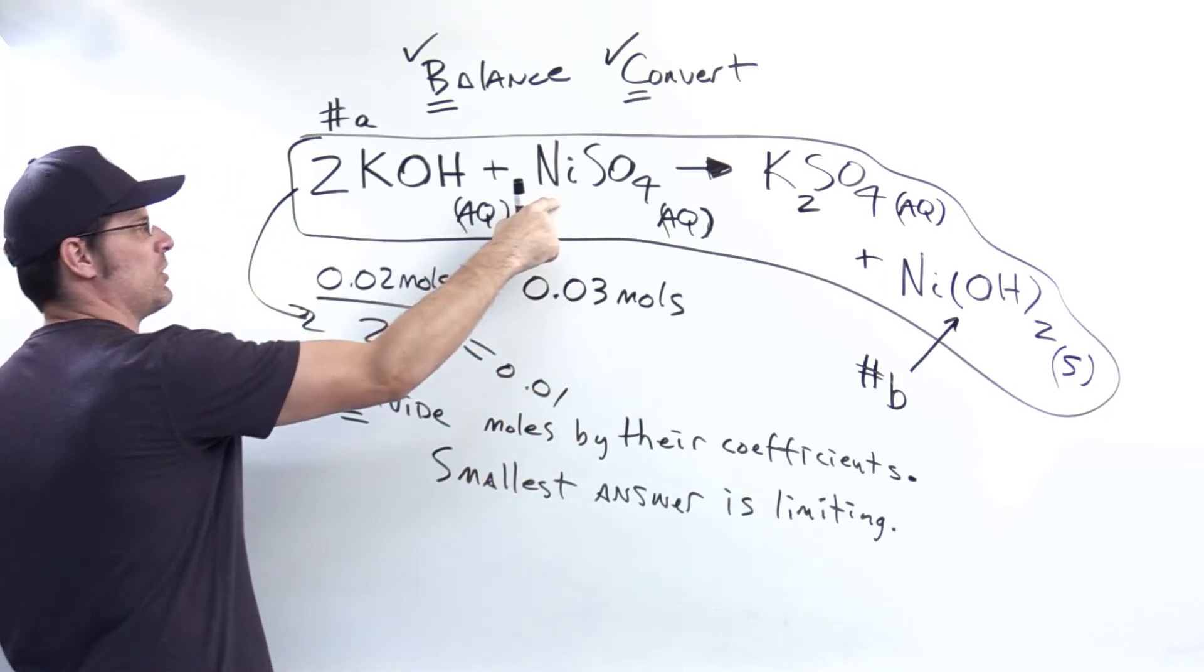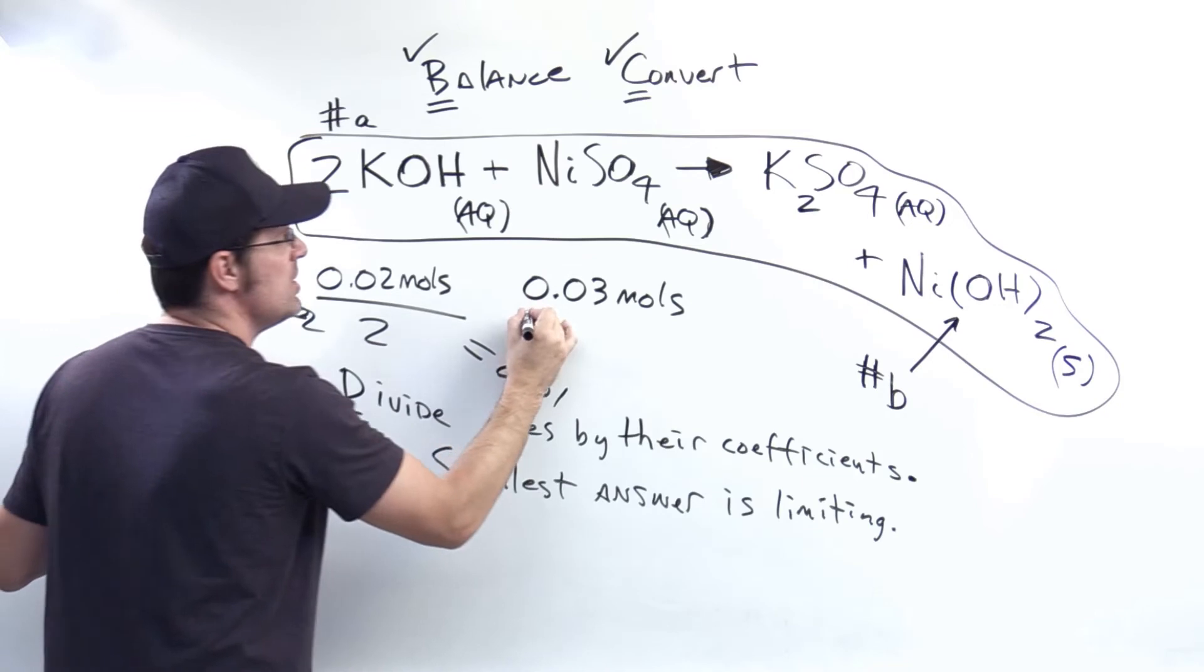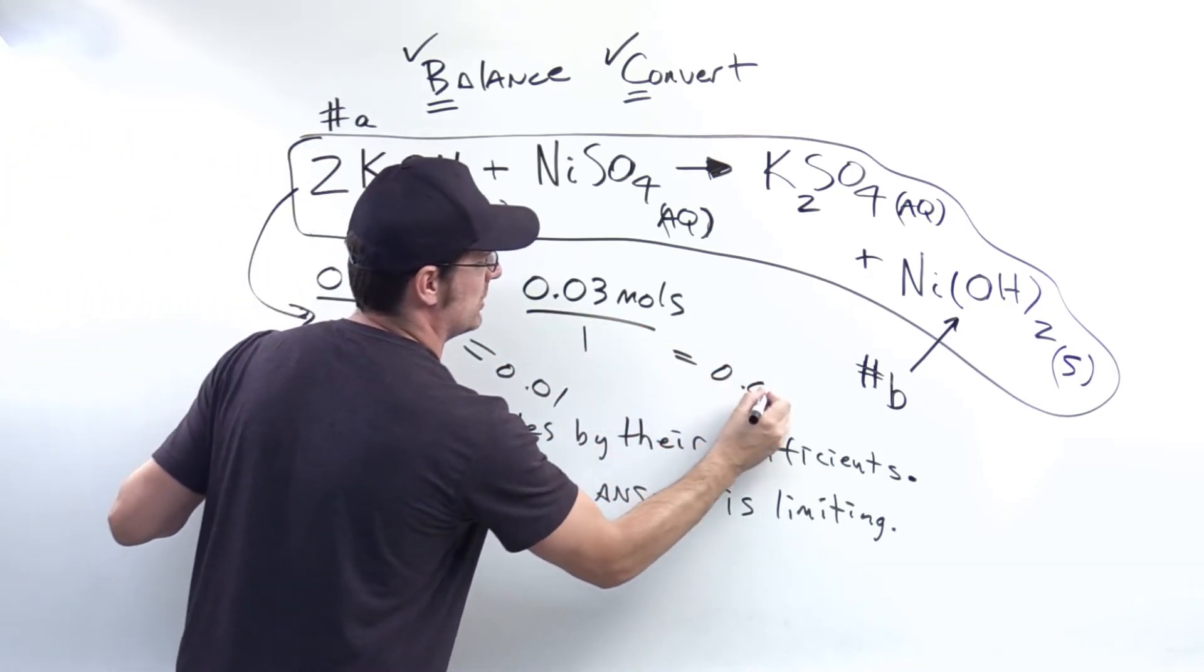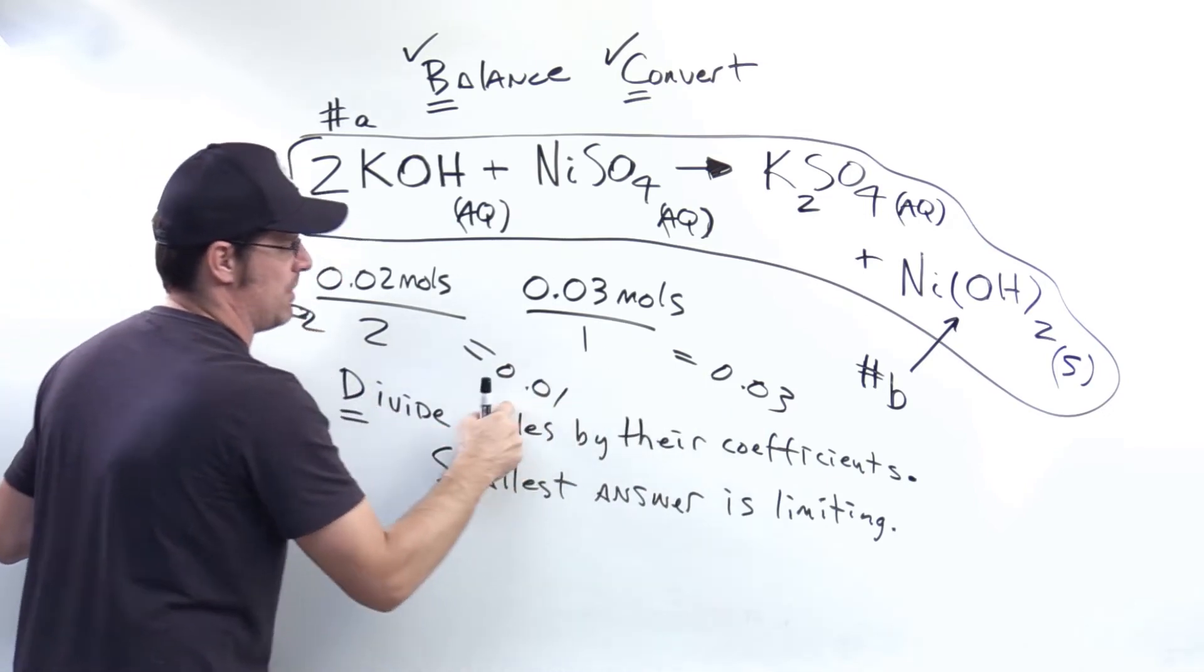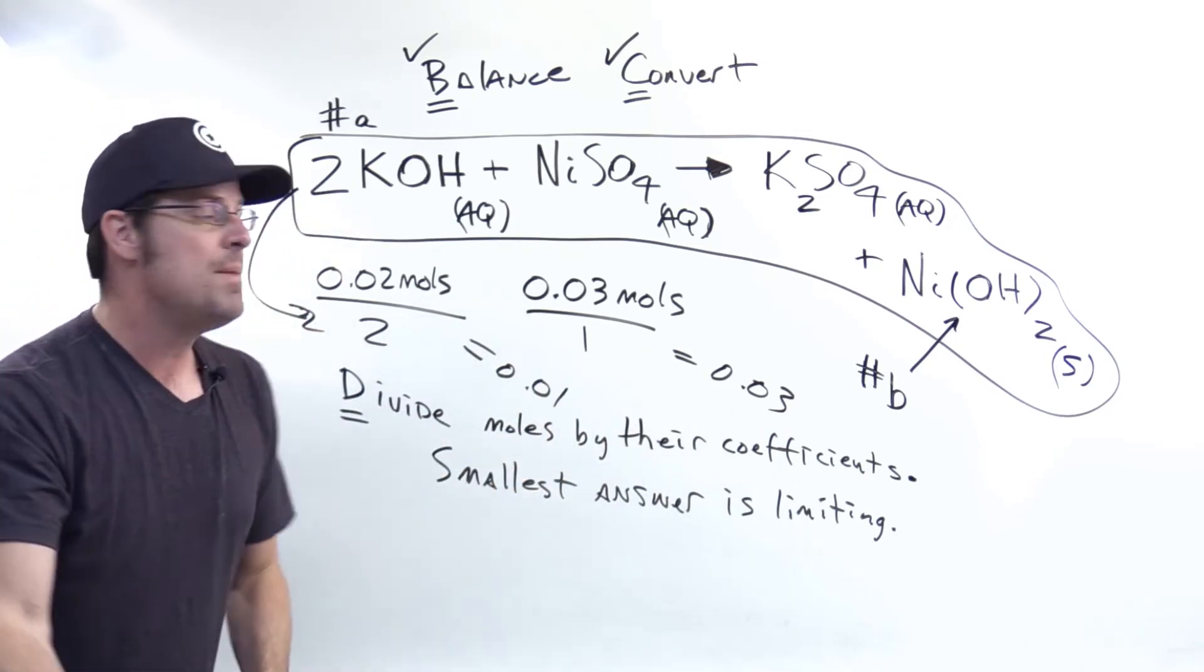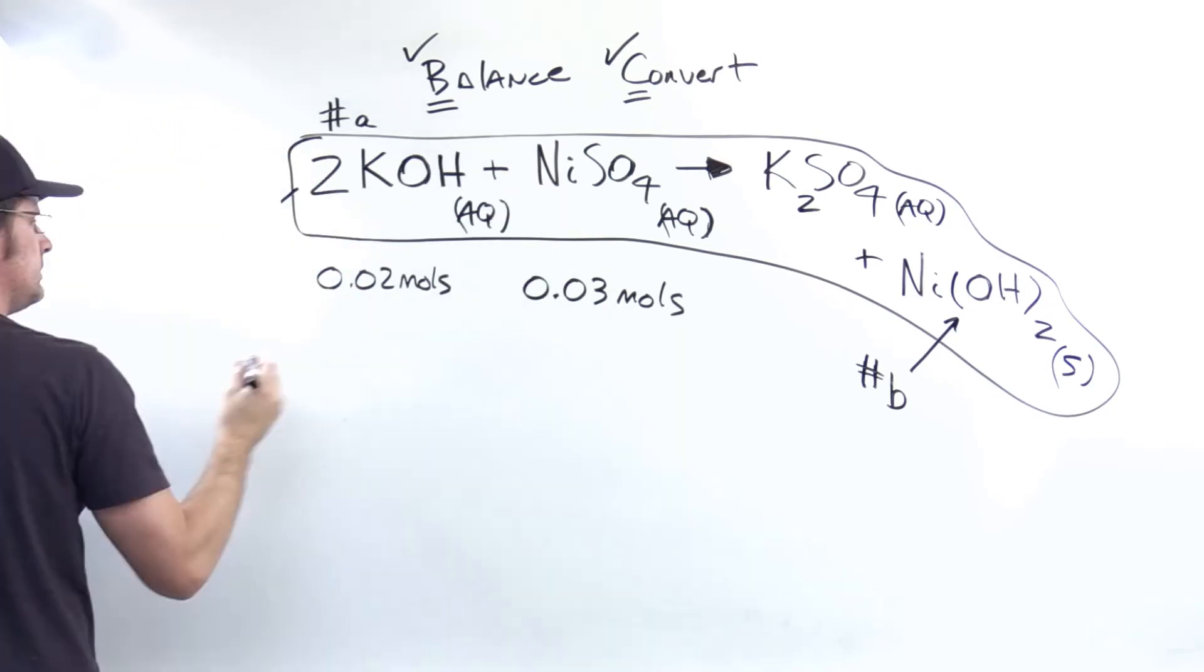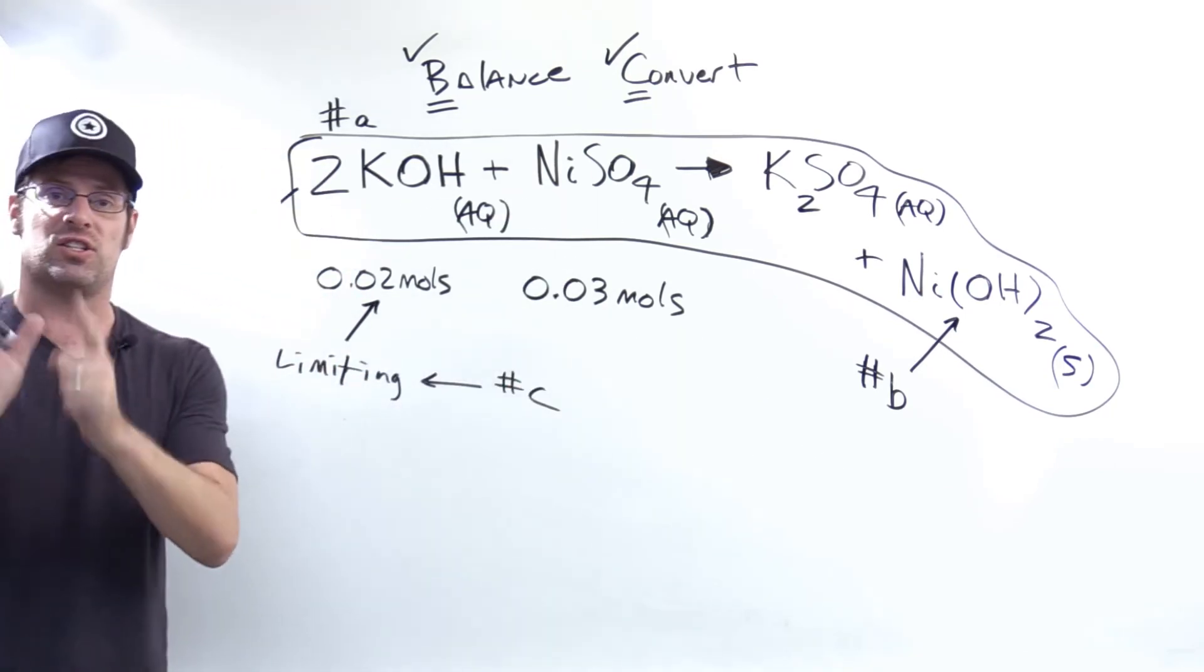Over here, I've got 0.03 moles nickel sulfate. There's no coefficient written here, so it's an understood or implied one. 0.03 divided by one is 0.03. Now which of these two numbers right here, 0.01 or 0.03 is smallest? Yes, 0.01, which means that KOH is the limiting reactant, which is the answer to part C.